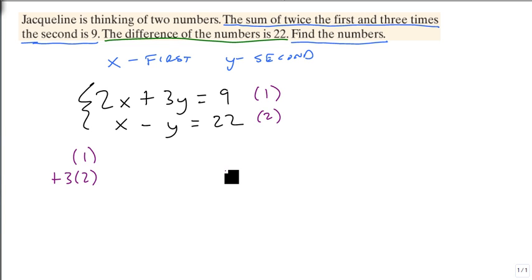So we're going to triple everything. Keep equation one the same, 2x plus 3y equals 9, and triple equation two to get 3x minus 3y equals 66.